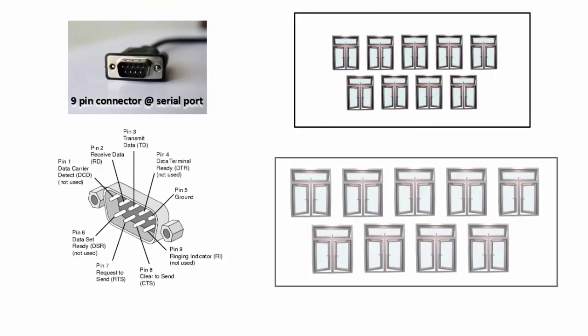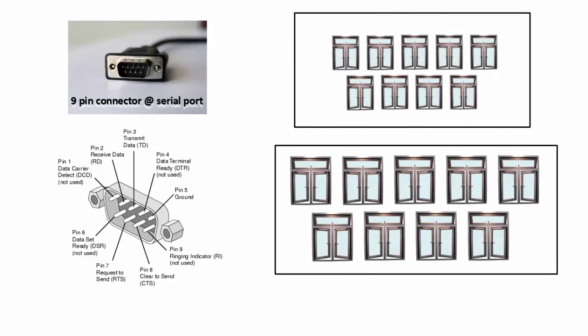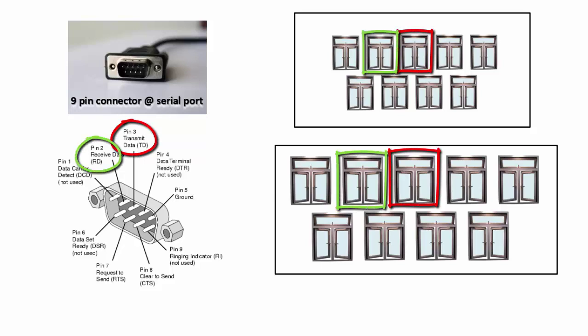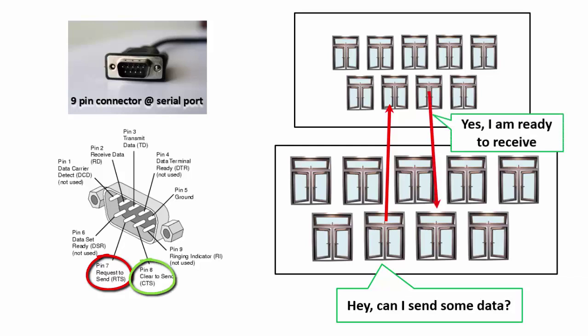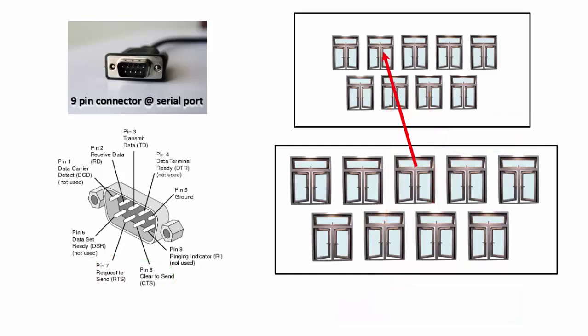You can visualize the 9 pins as 9 windows between the two buildings. The devices are supposed to send the data from window number 3 and can receive the data from window number 2, thereby making the two way communication possible. A flash from sender on window number 7 is like saying, hey can I send some data? If the receiver is in a position to receive the data, then it flashes back the signal on window number 8. After seeing the flash on 8, sender will start sending the data. Such signals are called interrupts.